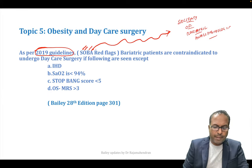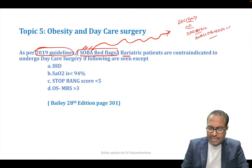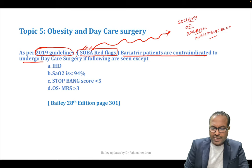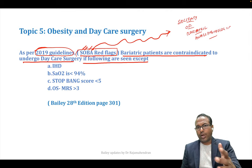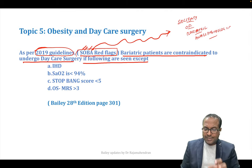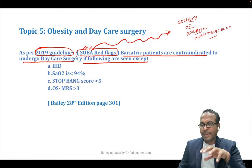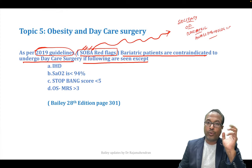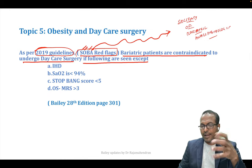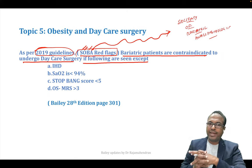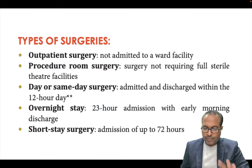A new SOBA guideline mentions red flags. Bariatric patients are contraindicated for daycare surgery if certain criteria are present. Old concept of daycare surgery: patient is admitted and discharged within 12 hours. Old criteria: ASA grade 1 and 2, BMI less than 40, surgery up to 2 hours, responsible adult for 24-hour care, house within 1 hour of hospital, patient able to eat and drink independently.